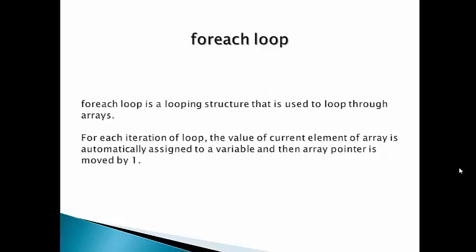In the first iteration, the first element of the array is assigned to a variable. In the second iteration, the array pointer moves to the second element, and the second element is assigned to the variable. This continues until all elements are covered. If we have an array of size 10, then we loop 10 times.